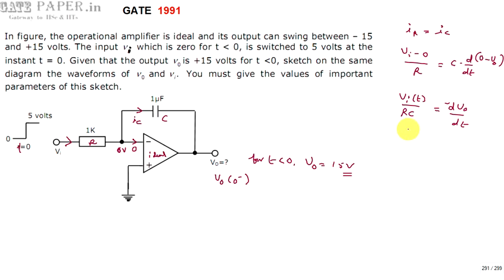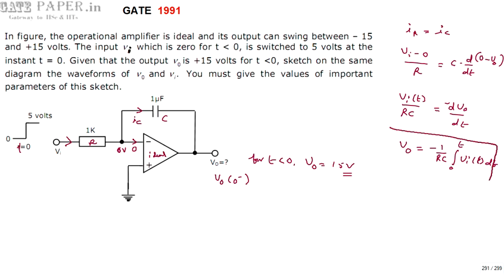Taking integration on both sides, we get the final value as V0 equals minus 1 by RC integral of Vi(T) dt. So the output is the integration of the input signal. This circuit acts as an ideal integrator. V0 equals minus 1 by RC, integral from 0 to t of Vi(T) dt.